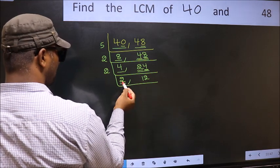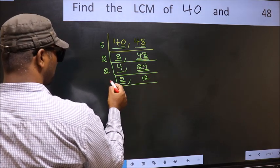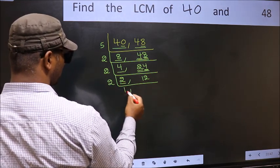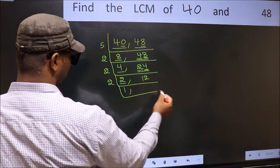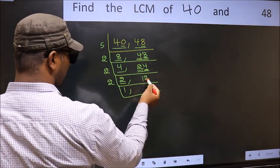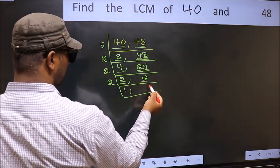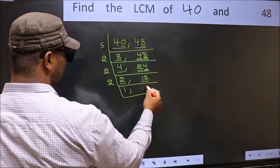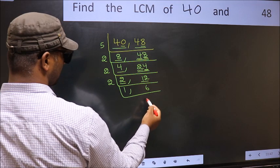Now here we have 2. 2 is a prime number, so 2 ones are 2. The other number is 12; when do we get 12 in the 2 table? 2 times 6 is 12.